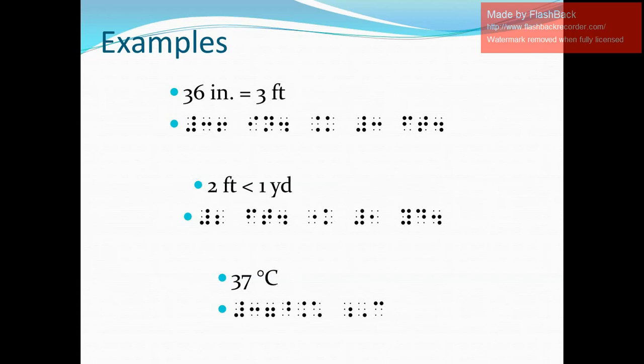Then finally, for our last example, we have 37 degrees Celsius. So in Nemeth Braille code, that should be written: numeric indicator, digits three and seven, and right after seven — no space — you need to write the Braille equivalent for degrees Celsius. So that's dots four five, then four six, then one and six, and then space, letter indicator dots five six, dot six for capital sign, and then letter C.